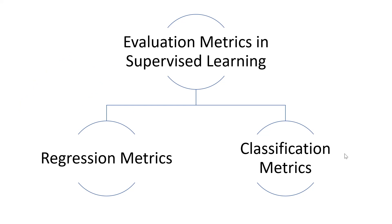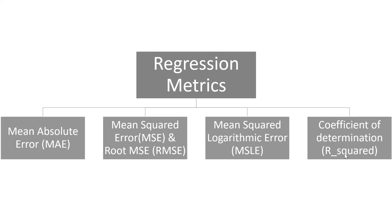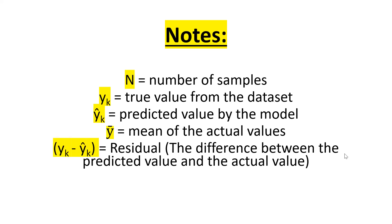In supervised learning we have mainly two types of evaluation metrics: the regression metrics and the classification metrics. In practice, for regression metrics we use mainly four types: the Mean Absolute Error, the Mean Squared Error, the Root Mean Squared Error, the Mean Squared Logarithmic Error, and the Coefficient of Determination.